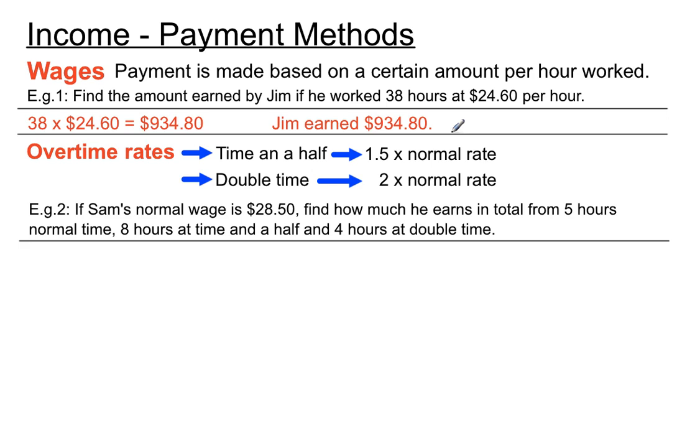So the first bit is five hours normal time. So that's this bit here, five hours at normal time. That's like example one here, we're just multiplying that out with no special adjustment there. So that's $142.50 on my calculator. You could double check me.